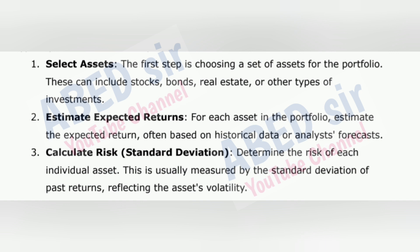These can include stocks, bonds, real estate, or other types of investments. Step 2: Estimate expected returns — for each asset in the portfolio, estimate the expected return, often based on historical data or analysts' forecasts. Step 3: Calculate risk — determine the risk of each individual asset. This is usually measured by the standard deviation of past returns, reflecting the asset's volatility.